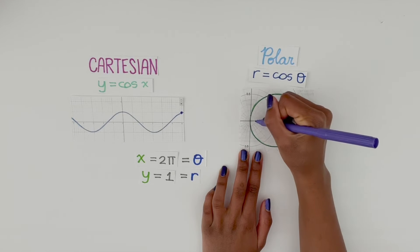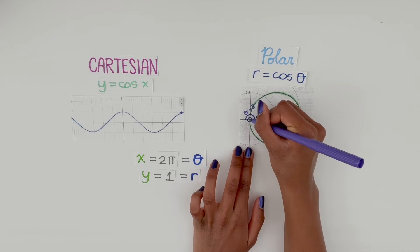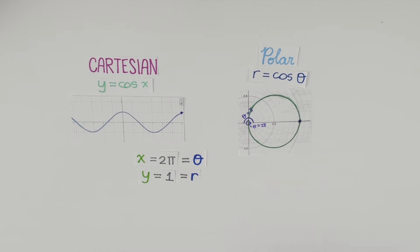And remember, 180 degrees is π and 360 degrees is 2π, which I'll represent on the graph just to make it really clear.